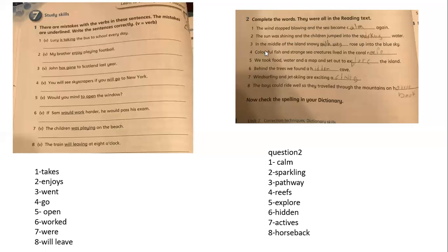Here number four: colorful fish and strange sea creatures lived in a coral reef. Here, reef without E. Number five: we took food, water, and map and set out to explore that island.